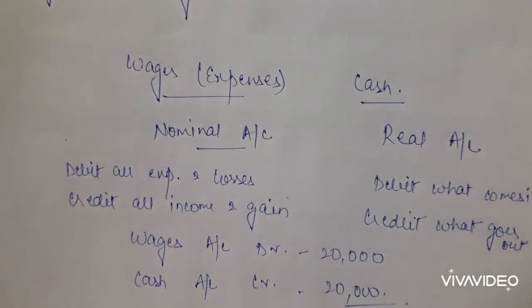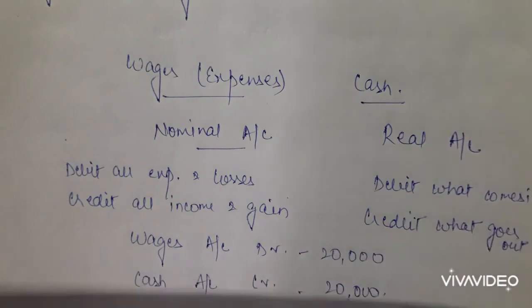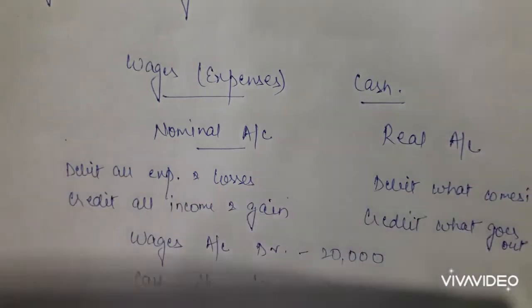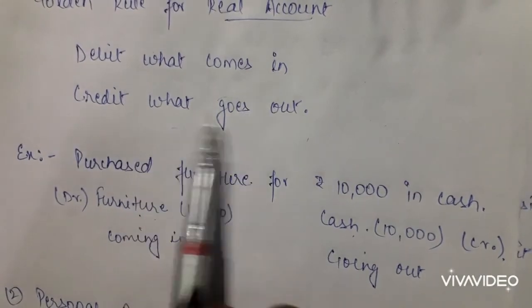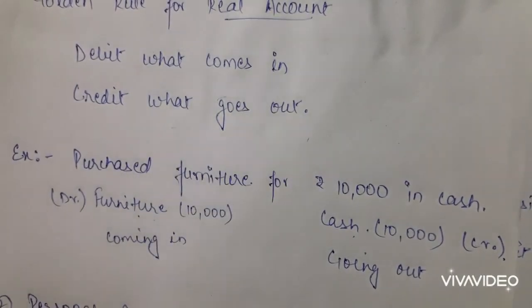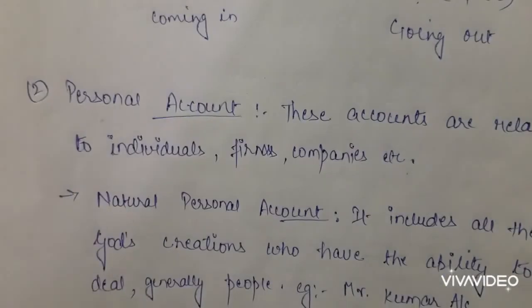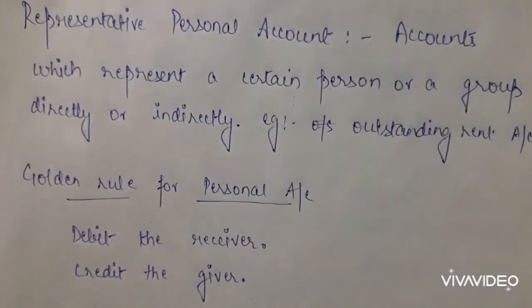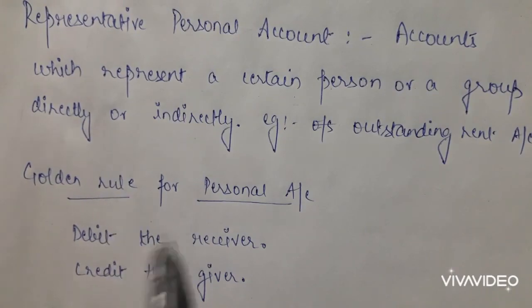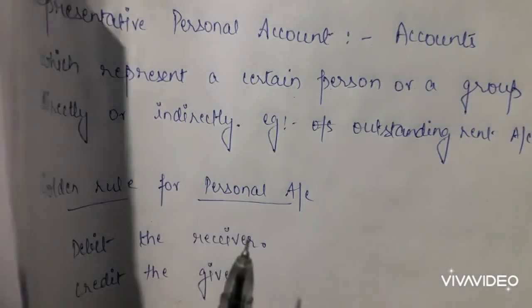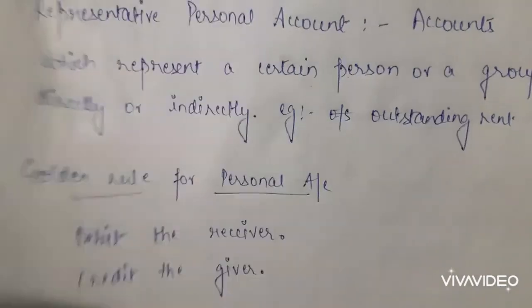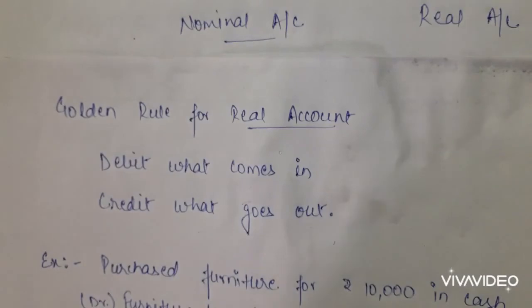So we have covered the three types of accounts and their golden rules. Real account: debit what comes in, credit what goes out. Personal account — classified into natural, artificial, and representative personal accounts — golden rule: debit the receiver, credit the giver. Nominal account: debit all expenses and losses, credit all income and gains. Thank you. If you found this a wonderful video and were able to understand all the topics, please make sure to like and subscribe.